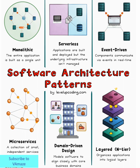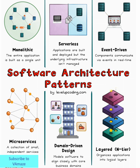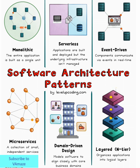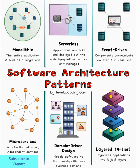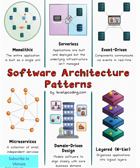Finally, we have layered or N-tier architecture, a structured approach where your application is divided into logical layers. Typically, you'll have a presentation layer, business logic layer, and data access layer, each with specific responsibilities. This pattern provides excellent separation of concerns and improves maintainability. Each layer has a clear purpose, and changes in one layer shouldn't affect others. It's a pattern that many developers find intuitive and easy to understand. However, layered architecture can introduce performance bottlenecks due to rigid dependencies between layers. A request might need to pass through multiple layers even for simple operations, which is why more modern patterns like microservices or event-driven architectures are often preferred for new applications.